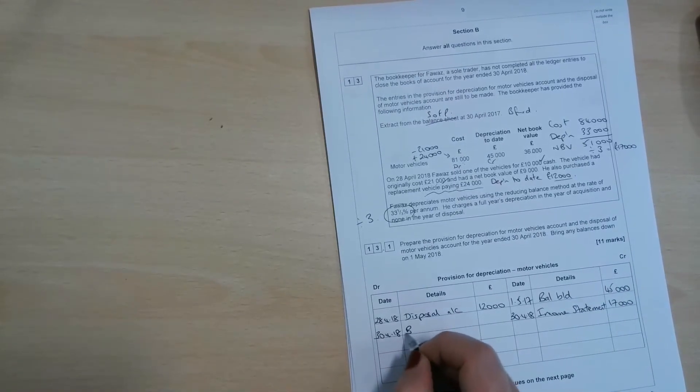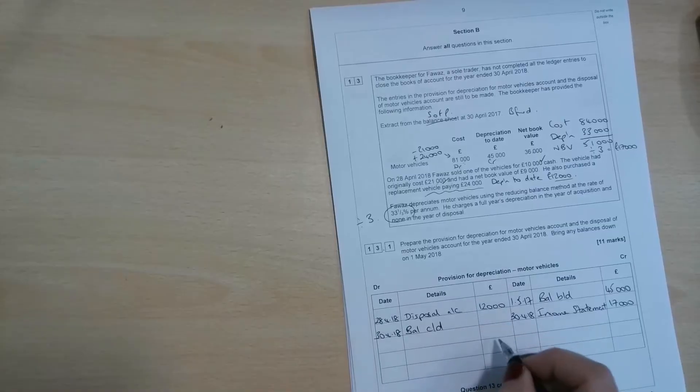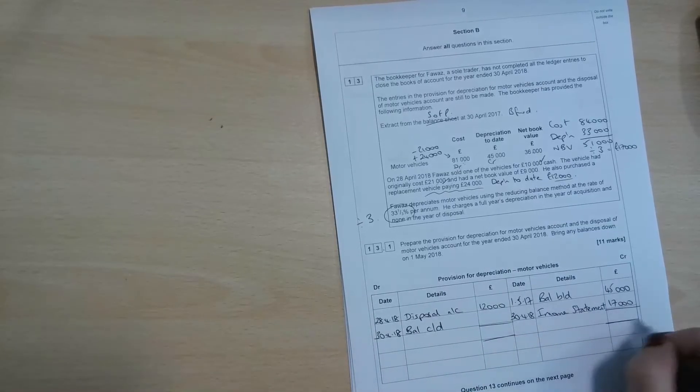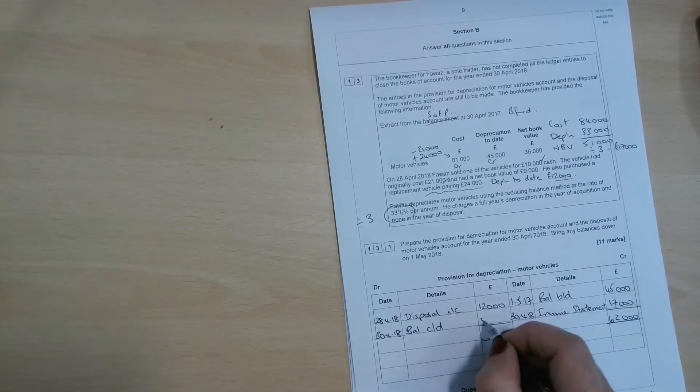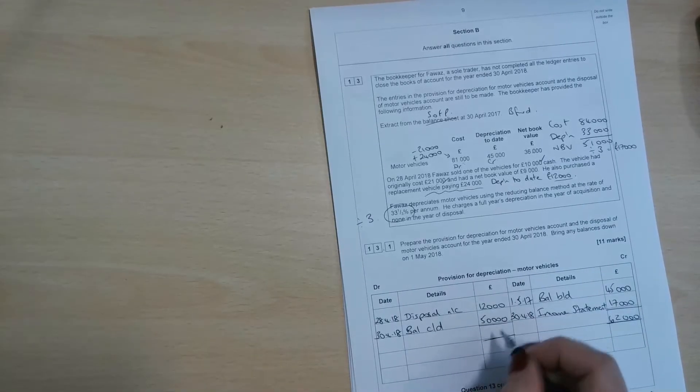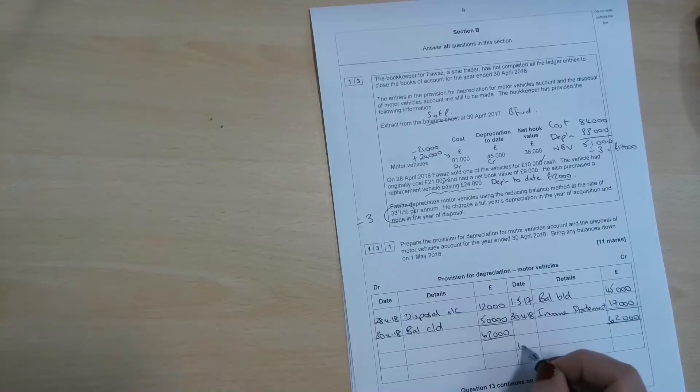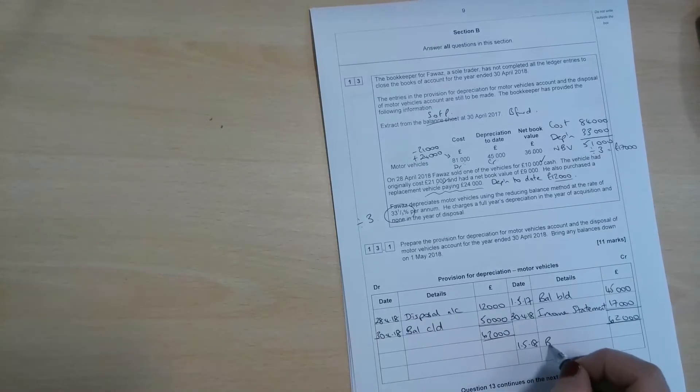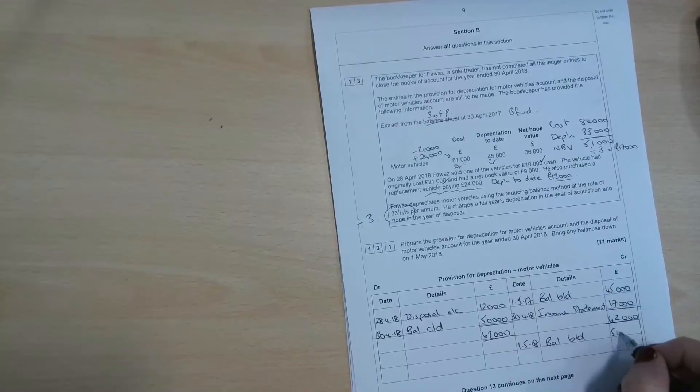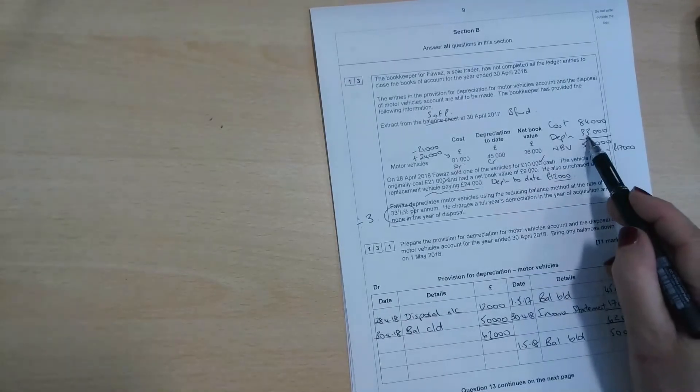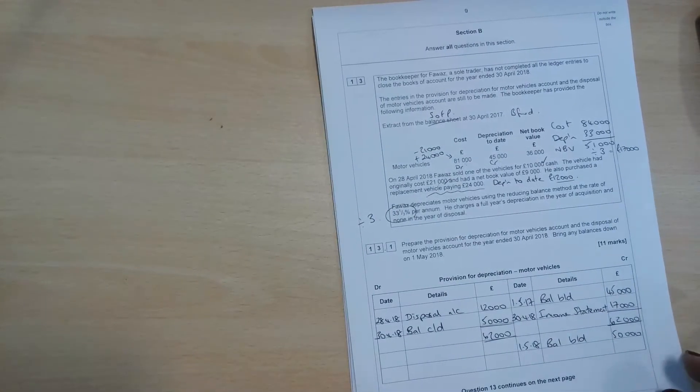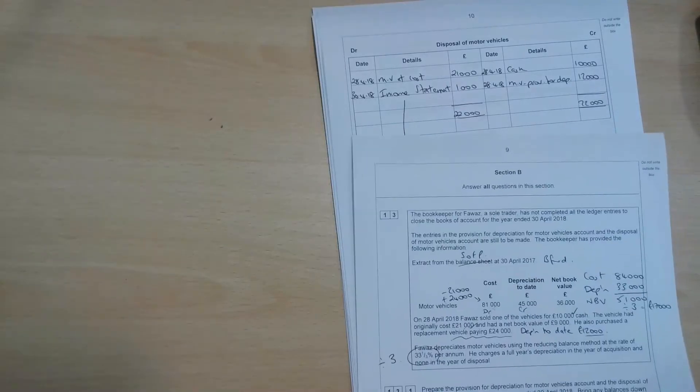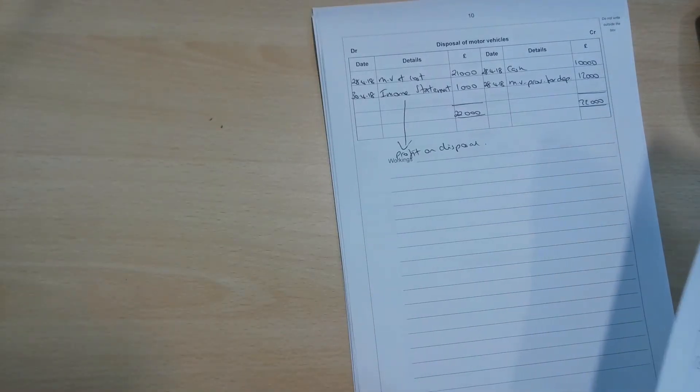So at the end of the year, we can do a BALCD, balance this account off. So 45, so what we've got there, 12, £62,000 there. So that gives us a balance of £50,000. And then 1st of May 2018, BALBD, £50,000, which is the £33,000 plus the £17,000 that we've added this year. And obviously, the disposal account has already been balanced off, so we've already sorted that one out.